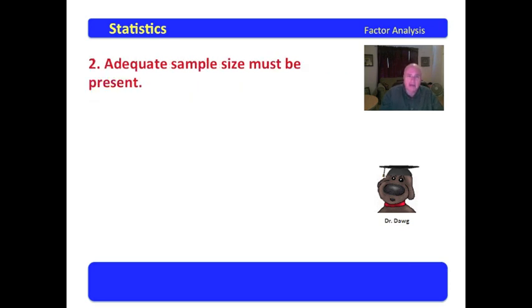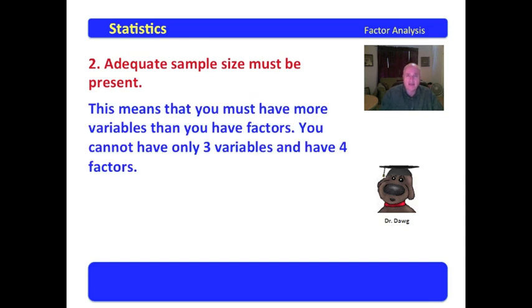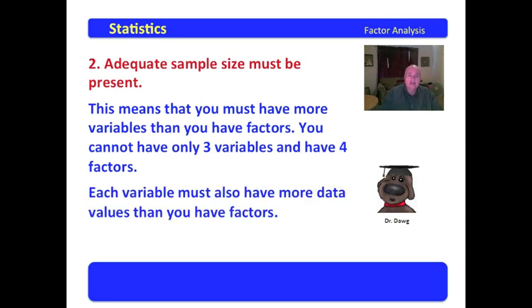You must have adequate sample size. And this means that you must have more variables than you have factors. You cannot have only three variables and have four factors. And each variable must also have more data values than you have factors. If you're looking for four factors, you need to have a substantial number of data points in each of the variables.